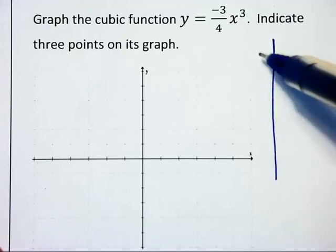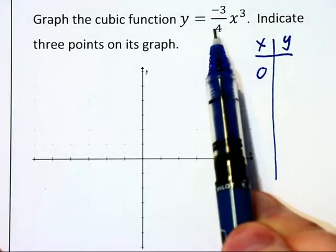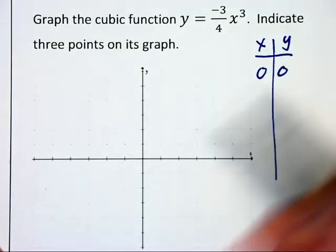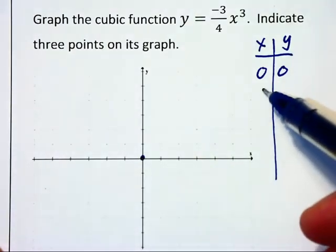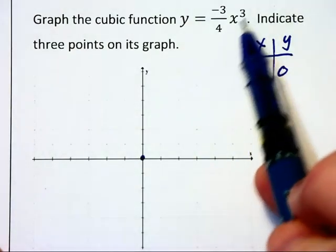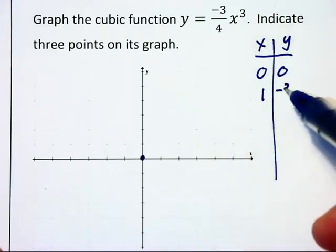Finally we look at negative 3 quarters x cubed. Let's start with an input value of 0. 0 cubed is 0. Multiplied by anything is 0. So this graph goes through the origin. Let's substitute in 1. 1 cubed is 1. Multiplied by negative 3 fourths is negative 3 quarters.